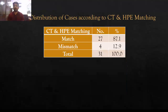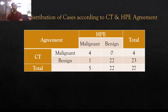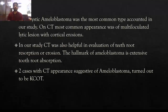Distribution of cases according to CT and biopsy: out of 31 patients who opted for biopsy, 27 patients matched CT findings, and 4 patients did not match on biopsy. Of these, some were diagnosed as malignant on both CT and biopsy, and 23 patients diagnosed as benign on CT, of which 22 were confirmed benign on biopsy. Multicystic ameloblastoma was the most common lesion in our study, with the most common CT appearance being multilocular lytic lesion with cortical erosion.